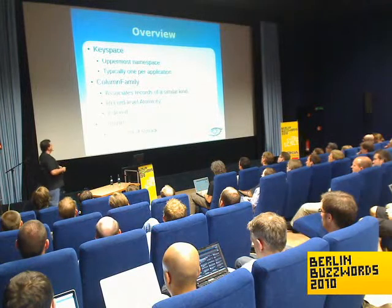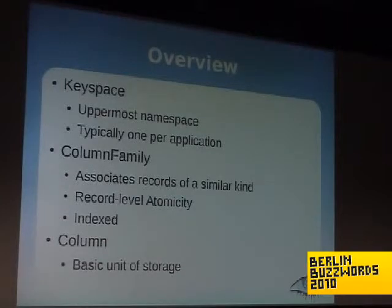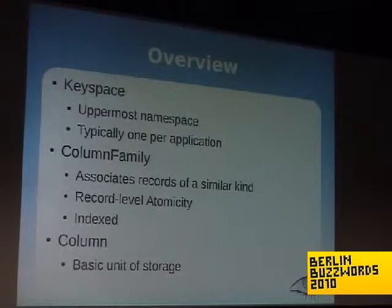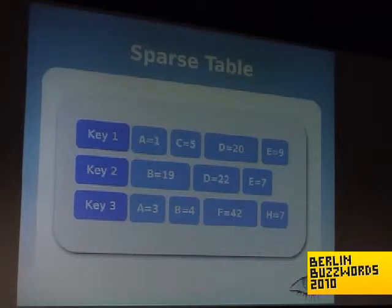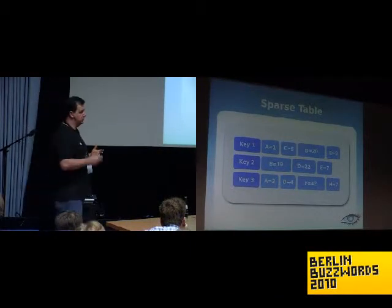Modeling data in Cassandra works like this: the uppermost namespace is a keyspace, which is more or less a multi-tenancy feature — you basically see one per application. Keyspaces can have an arbitrary number of column families, which is where records are stored. Records are simply a key and a collection of columns. It's at the record level that you get atomicity, and column families are where indexing occurs — this is where you store similar records, things you'd want to query back at once. It's like BigTable, HyperTable, HBase — a sparse table where the number and disposition of columns has no constraints.